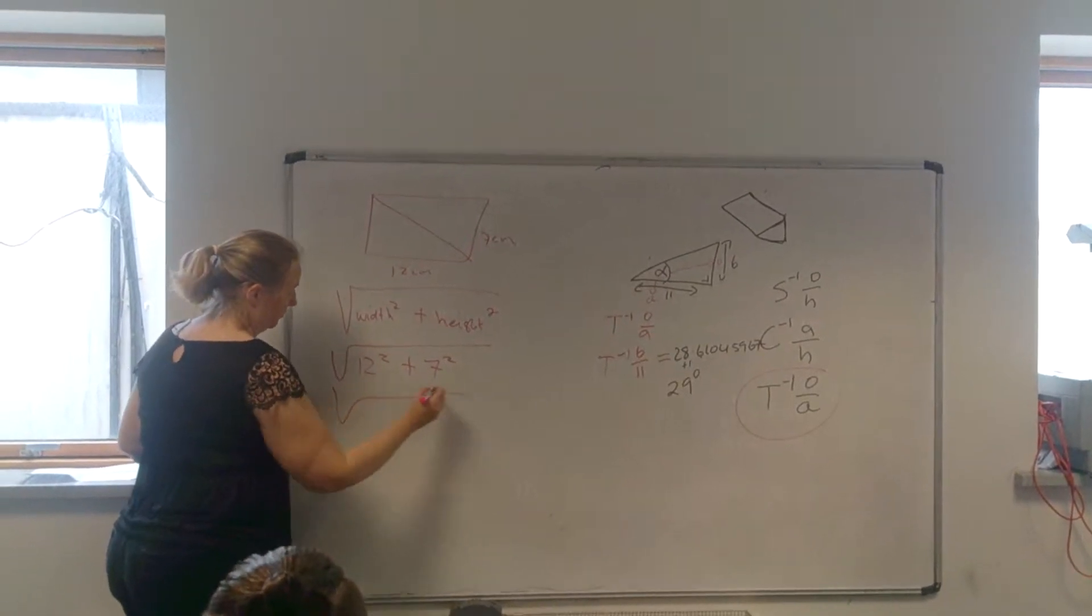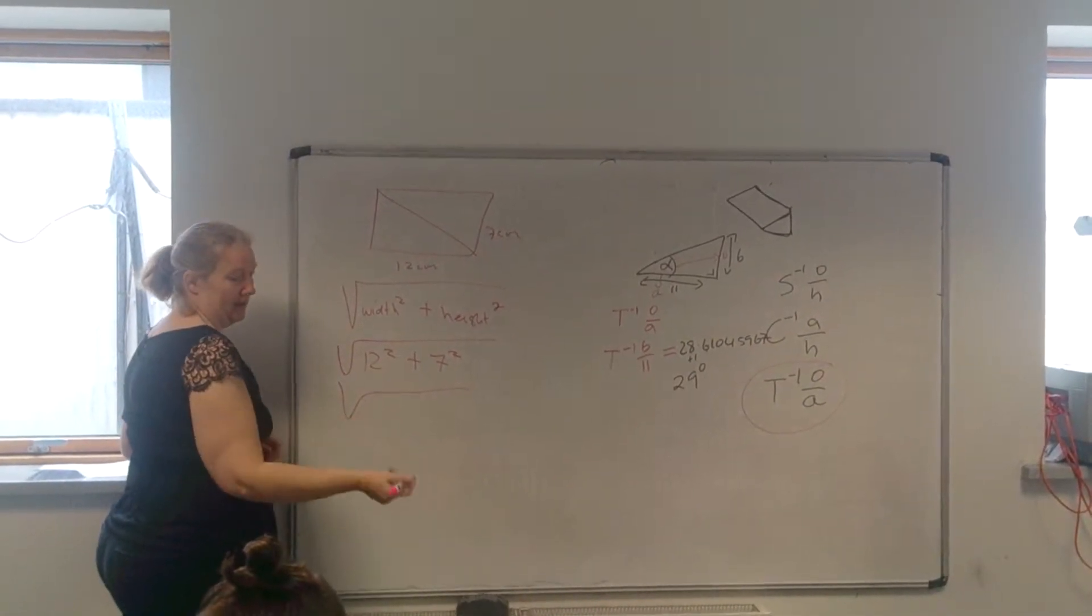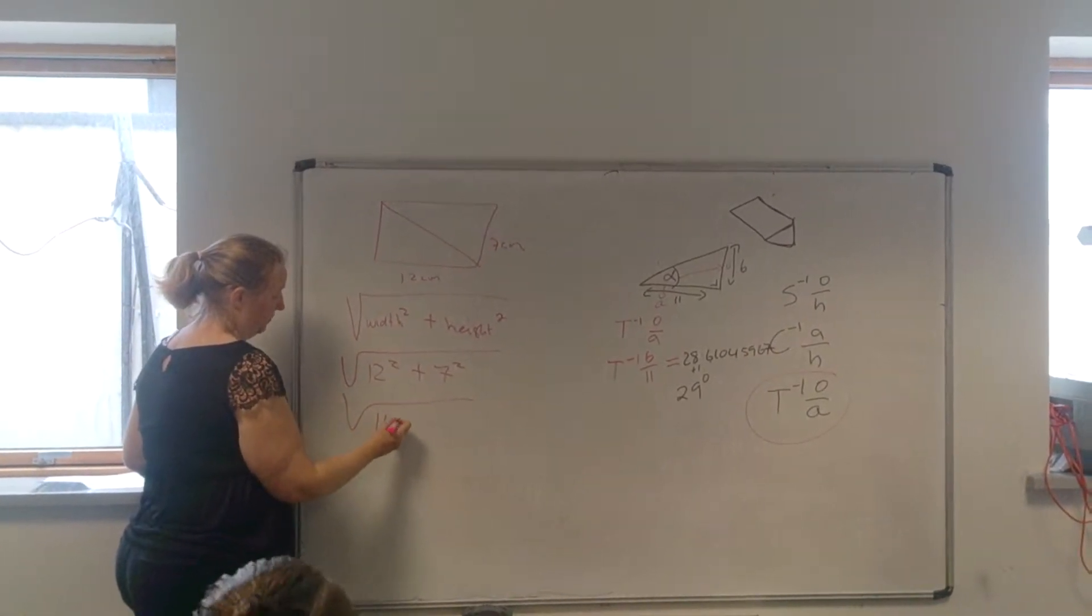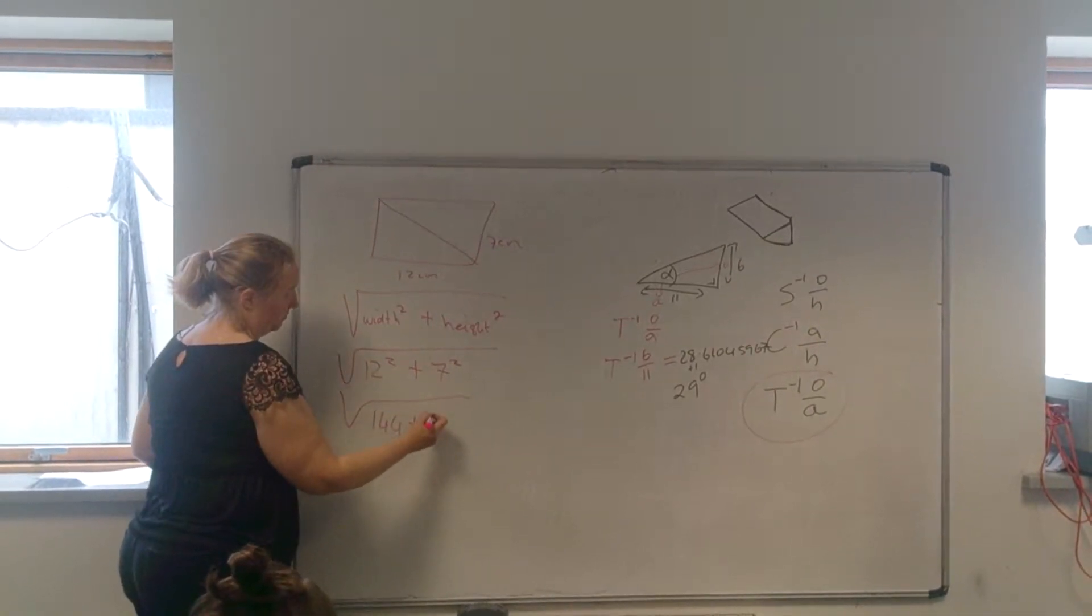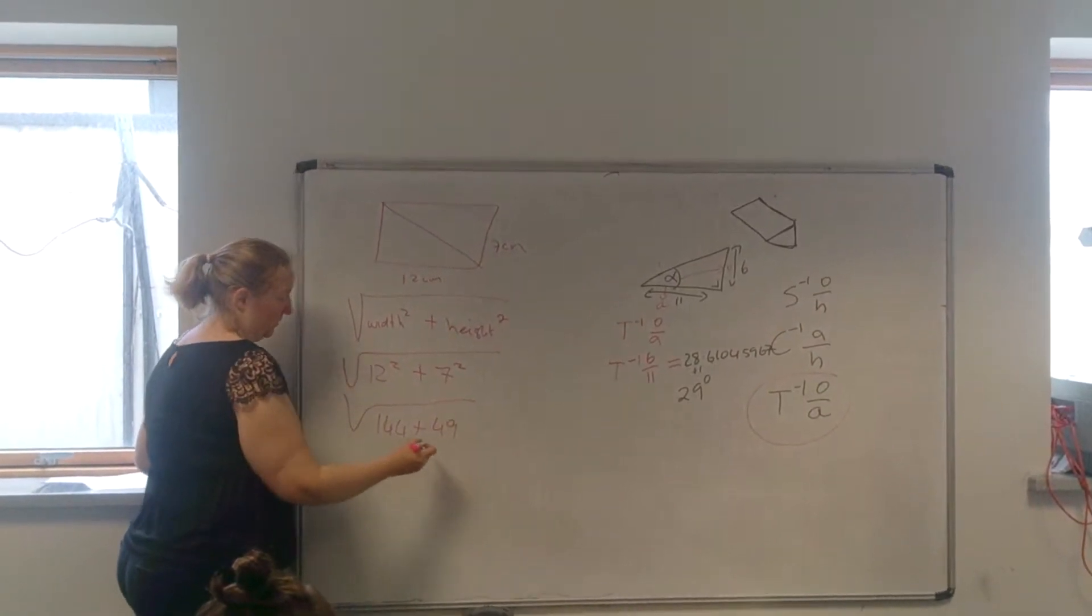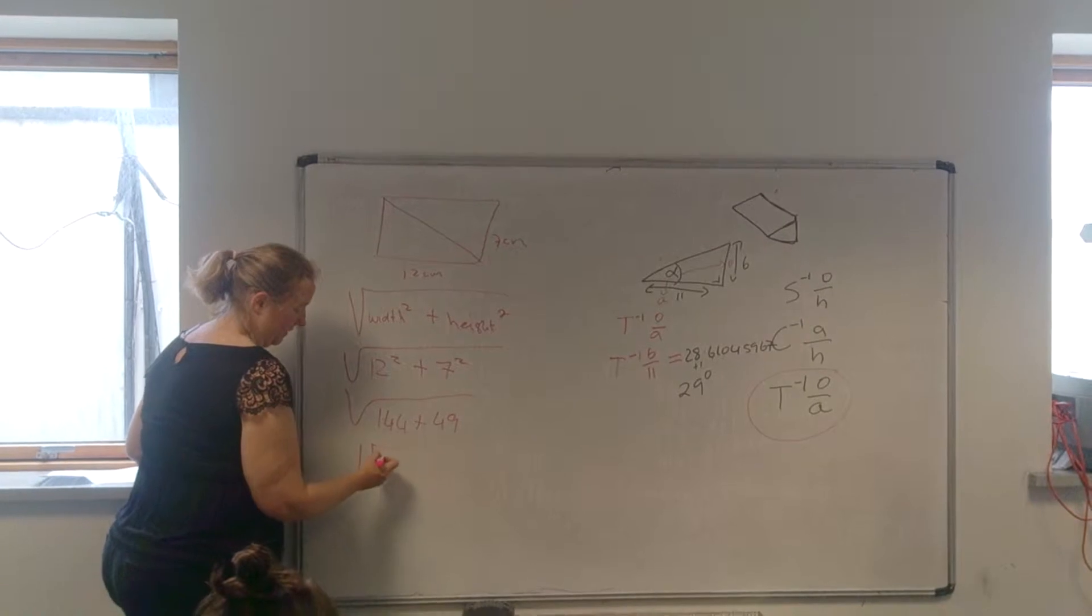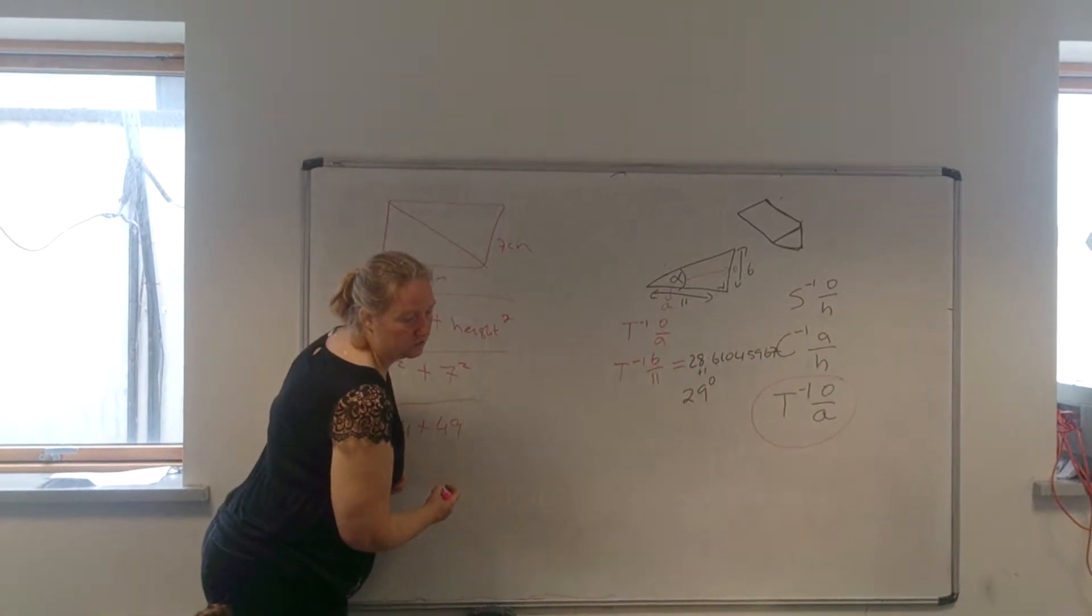So it's the square root of 12 squared is 12 by 12, or 12 squared, which is 144, plus 7 squared is 49. So it is the square root of, I think it's 193.